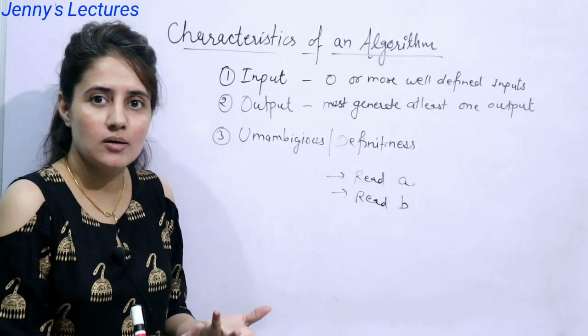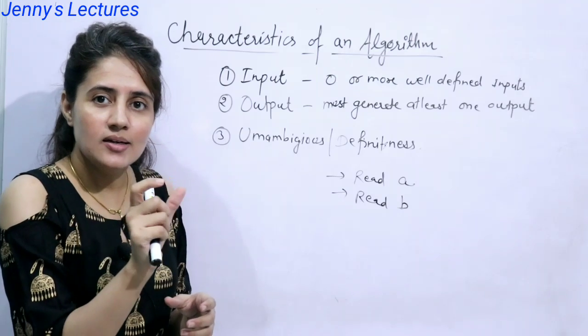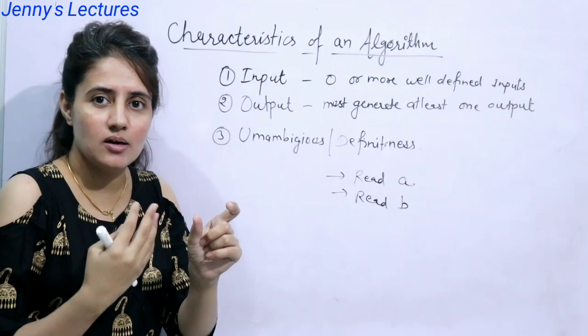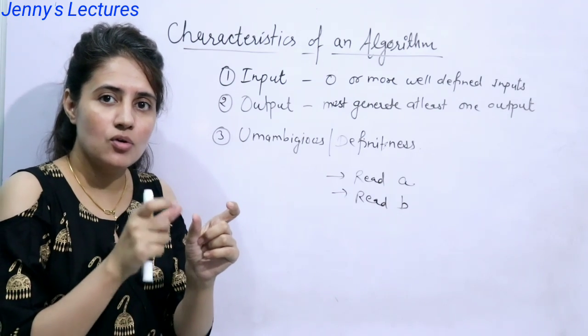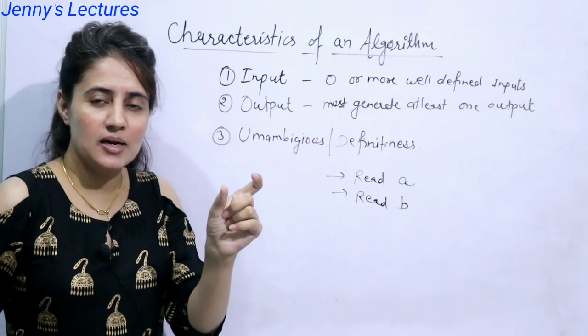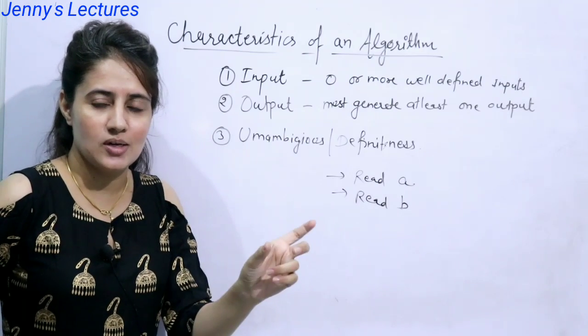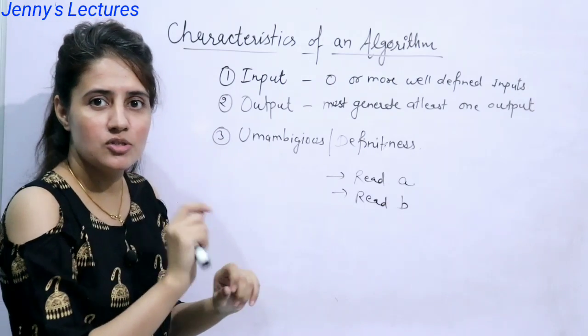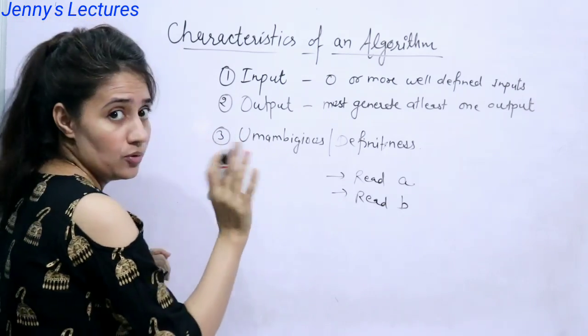Now, add means what, what to add, maybe you can add salt or anything else. So that add step, that instruction is having multiple meanings, that is ambiguous. We are not clear about that. If you say add water, add tea leaves, add sugar, add milk, that is clear statements, clear instructions, there is no ambiguity. So same in the case of algorithm, every instruction must be clear and precise, there should be no ambiguity. I hope you got this point.